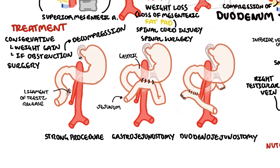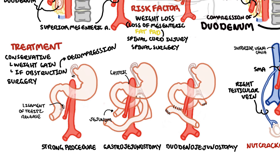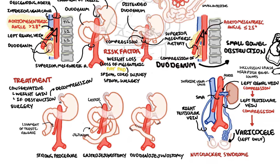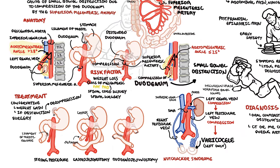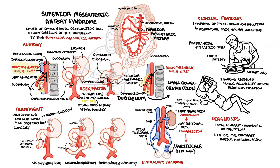In summary, superior mesenteric artery syndrome is a very rare cause of small bowel obstruction caused by compression of the third part of the duodenum by the superior mesenteric artery. It is associated with significant weight loss, and treatment can be broadly divided into conservative or surgical management.